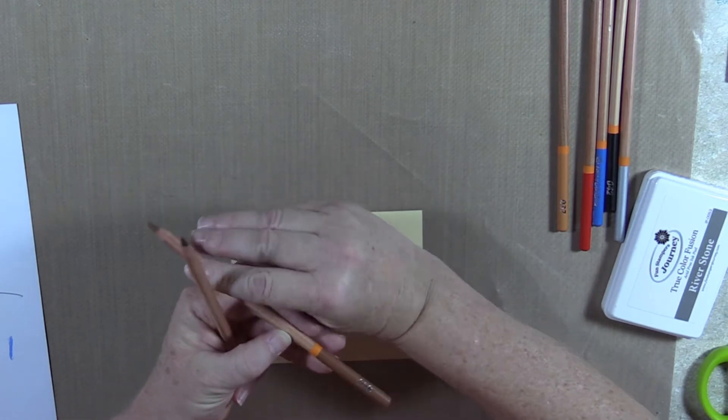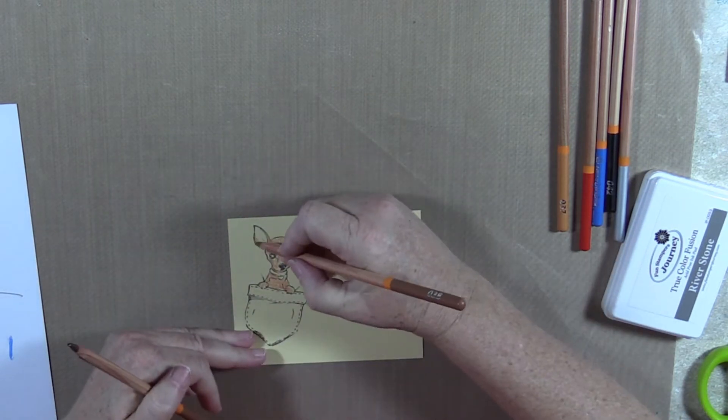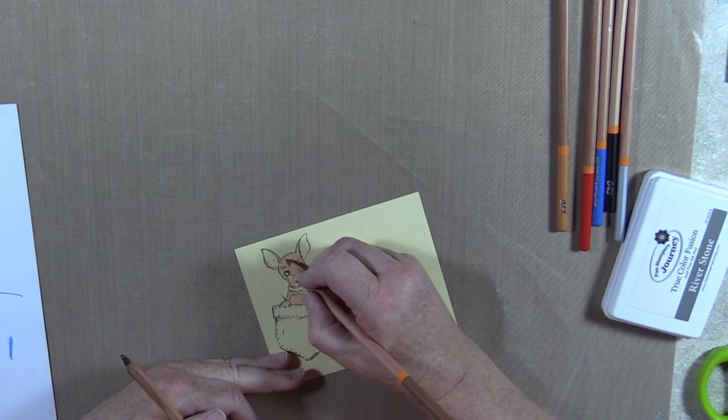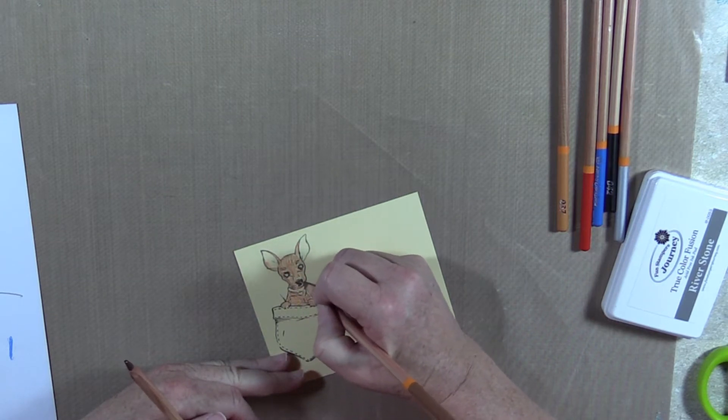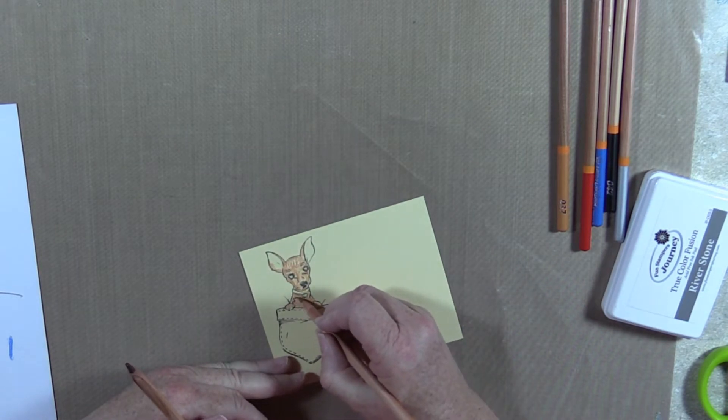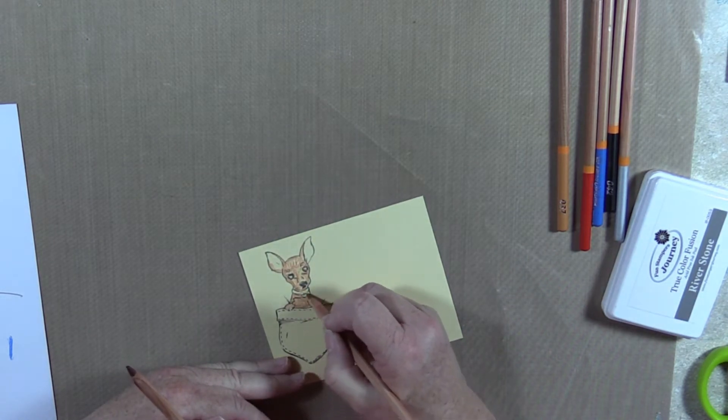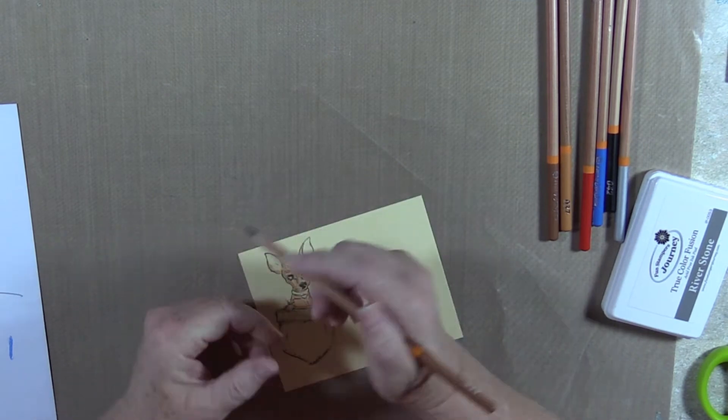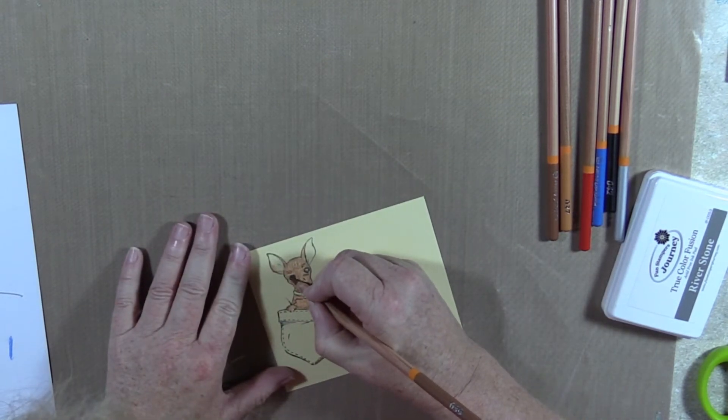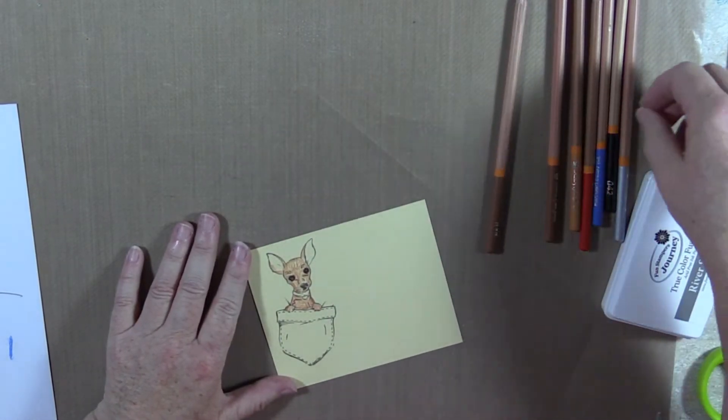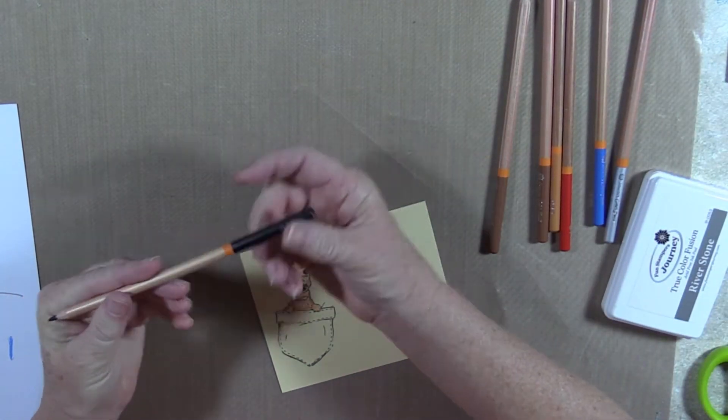Then the next one for some shading is 38. And the easiest way to do your shading is around the edge and wherever there is a line printed, because that kind of gives you a shadowy effect. Okay, the dark brown, which is 39, we're going to do his eyes.